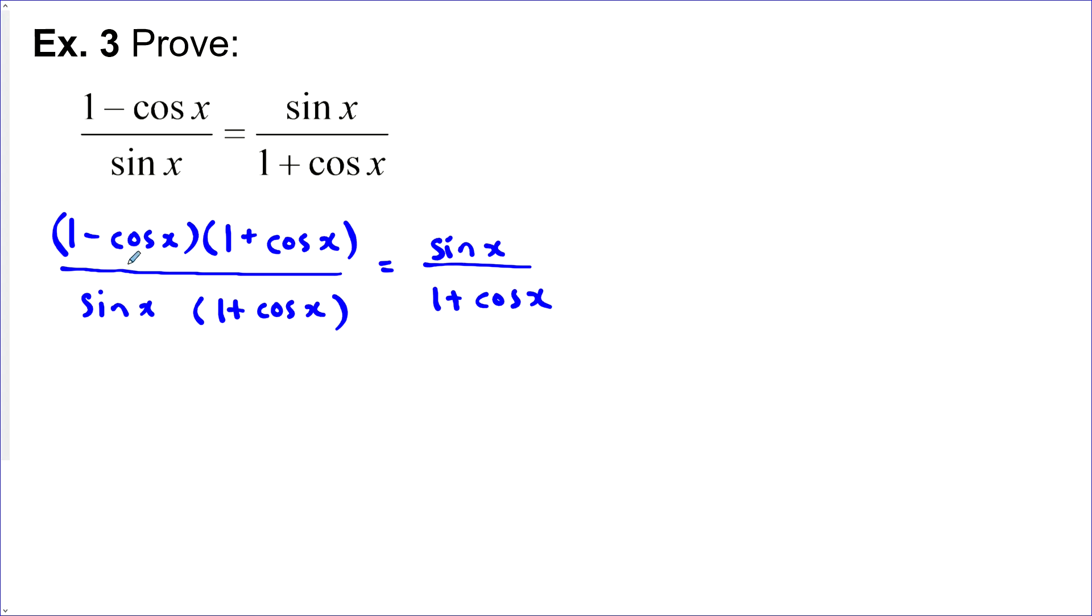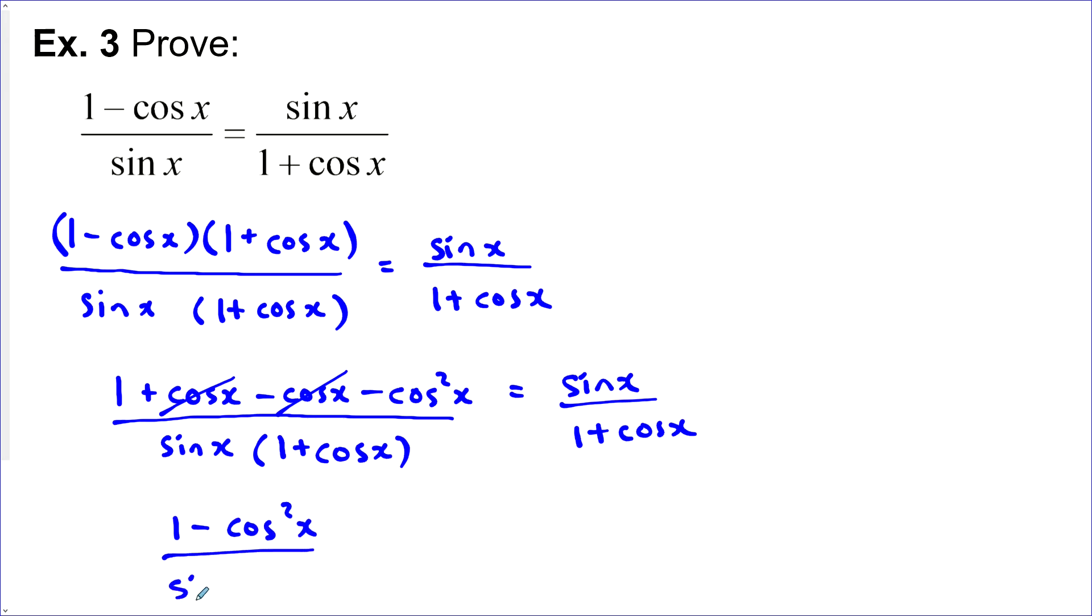When I multiply the numerator on the left, I'm going to get 1 + cos x - cos x - cos²x. That's it all multiplied out. You could shortcut that because this is a difference of perfect squares, so the middle terms cancel. I'm not going to multiply in the denominator. Generally, if things are factored, that's the way we would want them. In the numerator, I have 1 - cos²x. In the denominator, sin x(1 + cos x).